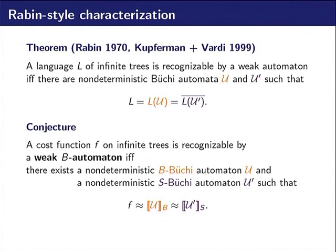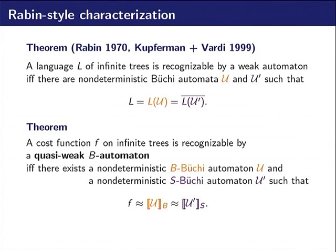For a long time, we tried to prove this conjecture that a cost function is definable by a weak B automaton if and only if it is B-Büchi and S-Büchi. But it turns out that it's not exactly it.